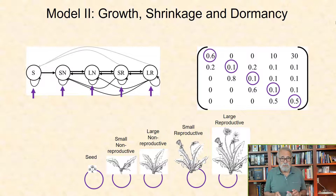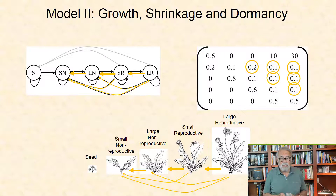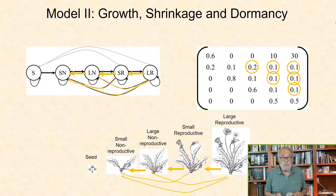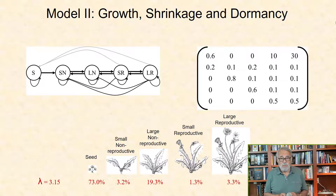It should be noted that these stasis transitions represent individuals that stay in the same state and remain the same size. Regression of individuals into prior states may occur through transitions from reproductive to non-reproductive states, and also as plants shrink to a smaller size class. The basic structure of Model 2 could also be applied to a species that, instead of shrinkage, shows fragmentation, where larger individuals break apart to form smaller clones of itself. Fragmentation may occur not only for some plant species where modules break off and become physiologically independent, but also for corals or other modular animals. With the values specified in Model 2, the growth rate lambda of this population is 3.15, and the stable stage distribution is 73.0, 3.2, 19.3, 1.3, and 3.3% for each of these stage classes respectively.